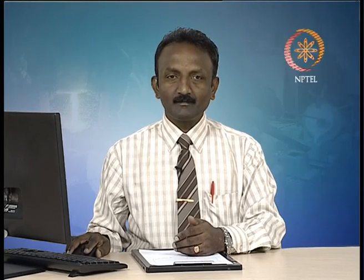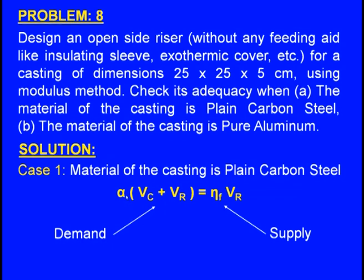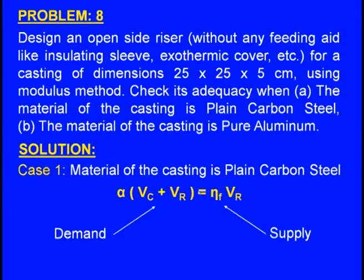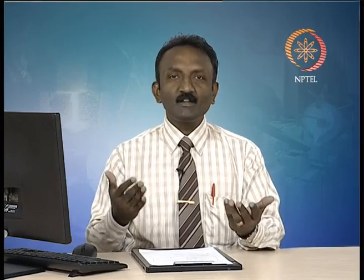We need to cross-check whether this design is sufficient for feeding the casting — does the liquid metal present in this riser of size 12.8 × 12.8 cm have sufficient liquid metal to feed the casting? Case 1: material of the casting is plain carbon steel. Using the expression alpha × (Vc + Vr) = eta_f × Vr, the left-hand side represents the total shrinkage or demand, and the right-hand side represents the supply of liquid metal available for feeding.